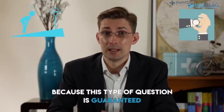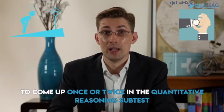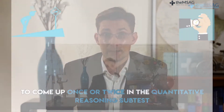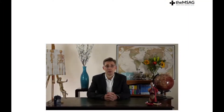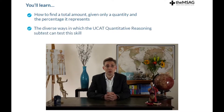If that question sounds challenging or time-consuming, then keep watching because this type of question is guaranteed to come up once or twice in the quantitative reasoning subtest. Our objectives over the next six minutes or so are to show you how to find a total amount given only a quantity and the percentage it represents, and explore the diverse ways in which the UK CAAT quantitative reasoning subtest can test this skill.